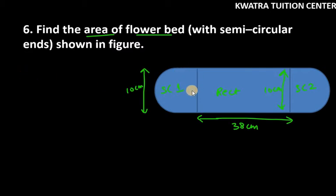the radius of semicircle is 5 centimeter, half of 10 centimeter. So we have all the given parts which we require to find area of the flower bed. So let's find this.